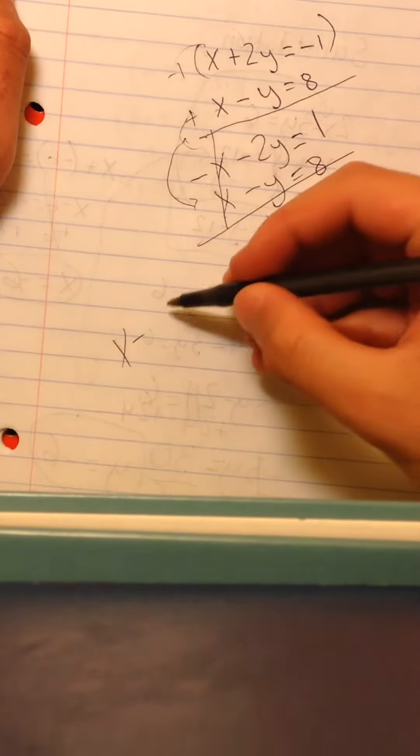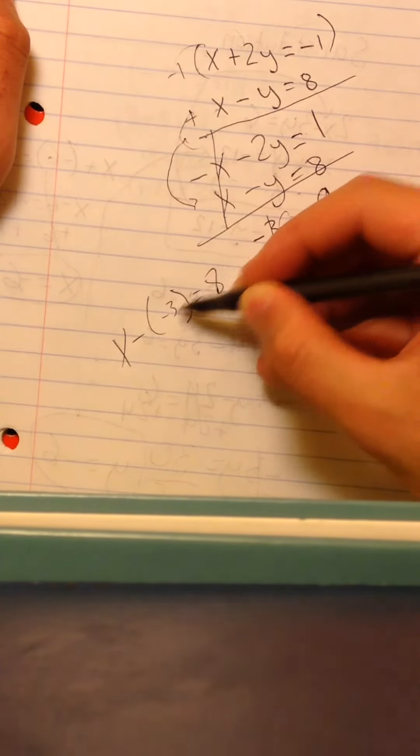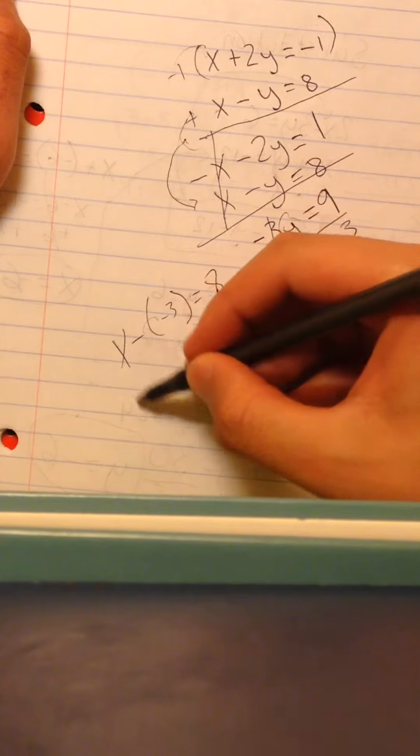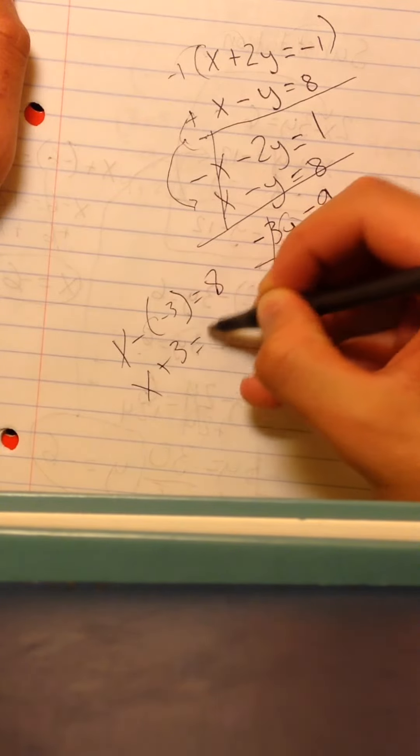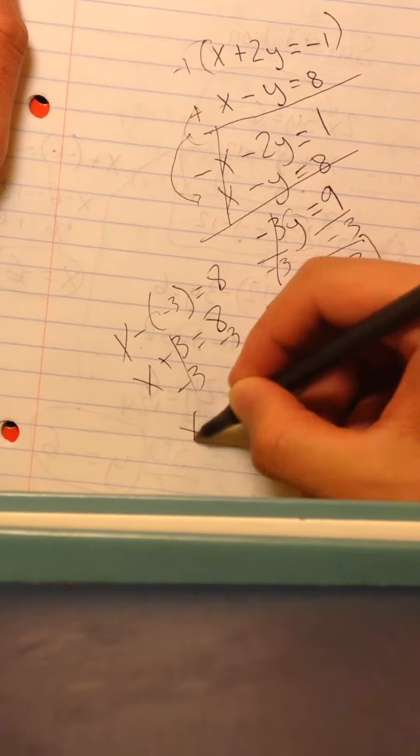So, x minus y is equal to 8. When y is negative 3, this becomes x plus 3 is equal to 8. We subtract 3 from both sides, so x is equal to 5.